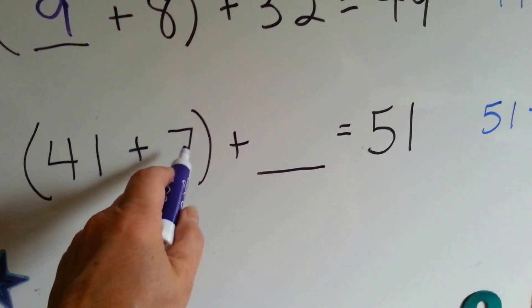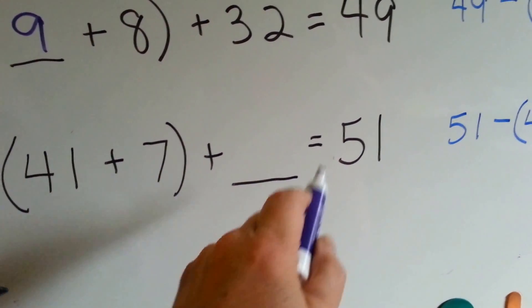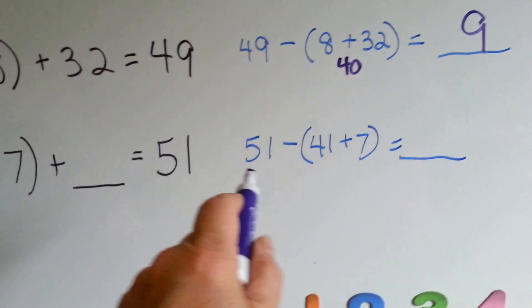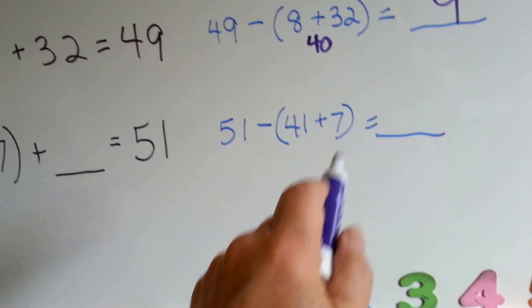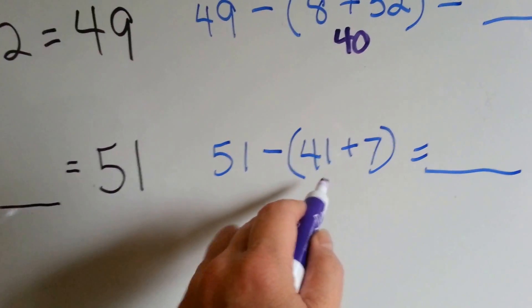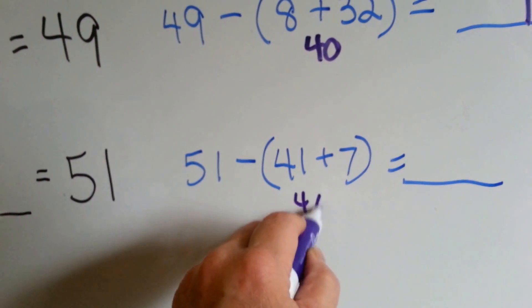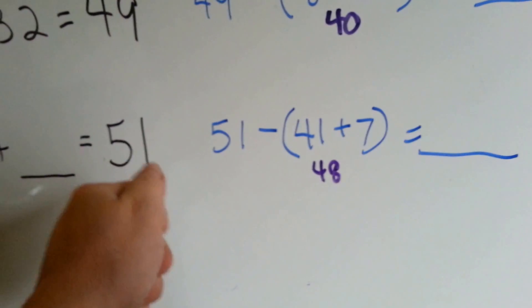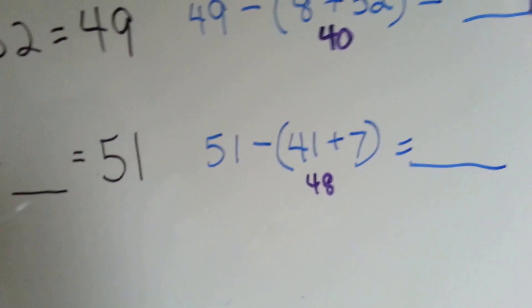41 plus 7 plus blank equals 51. Now we can do it this way. 51 take away the 41 plus 7. What is 41 plus 7? It's 48. What's 51 take away 48? It's 3.